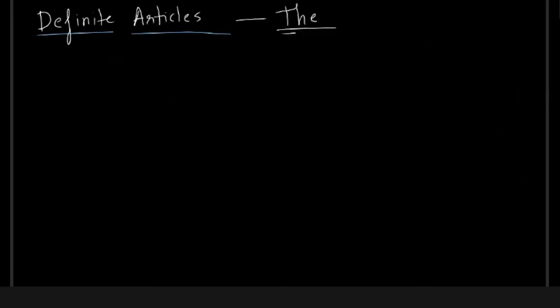Definite articles in English is just one, right? Just one variant. Whereas in French, let's begin with masculine singular. Masculine singular would be le. Feminine singular is la, feminine singular would be la. And then for words starting with a vowel sound, it would be l'apostrophe.